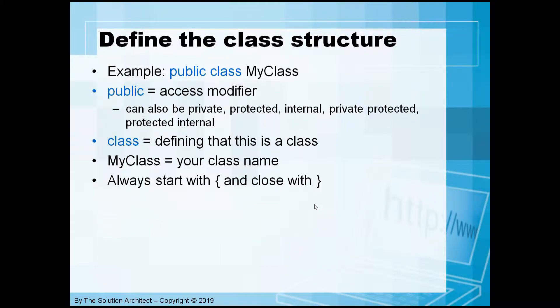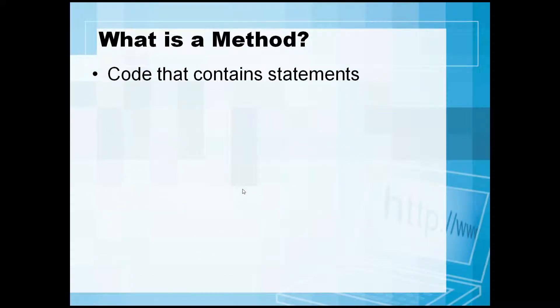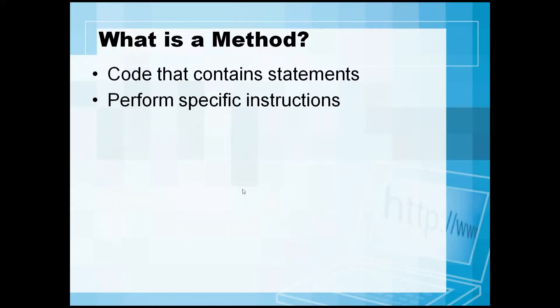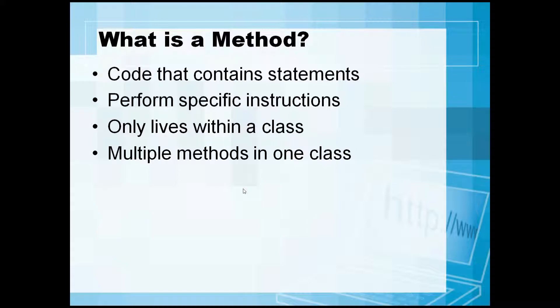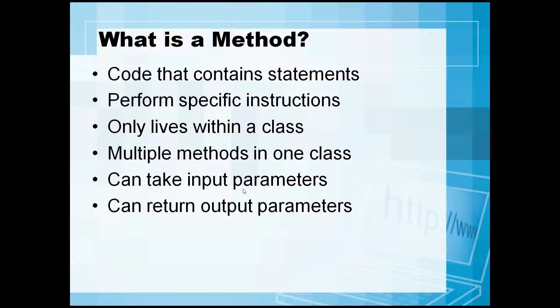The class always starts and ends with curly brackets. So what is a method? A method is code that contains specific statements to perform a specific instruction or set of instructions. A method can only live within a class, and you can have multiple methods within one class. A method can also take input parameters and return output parameters.